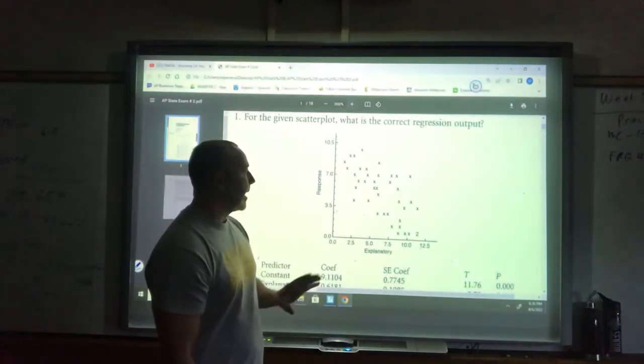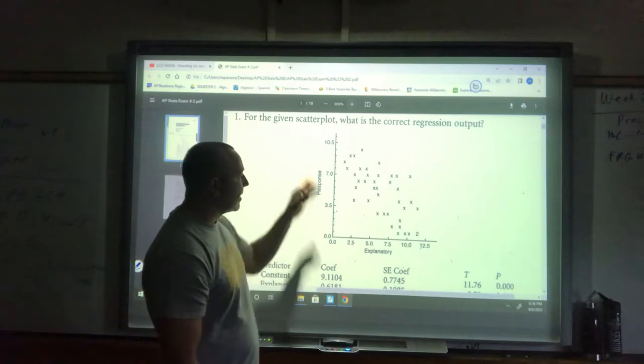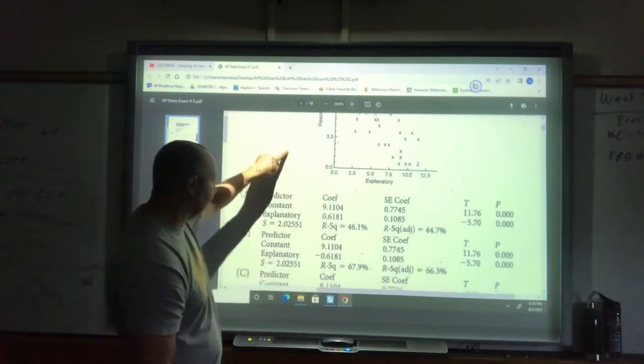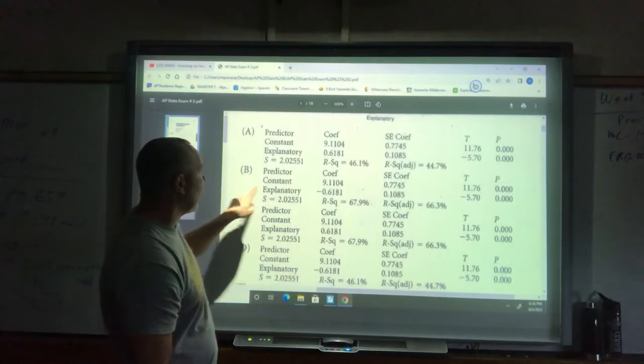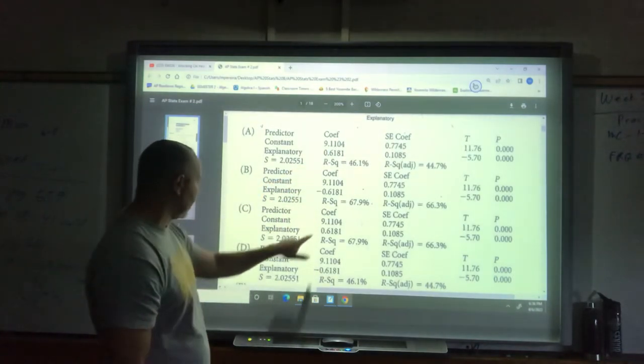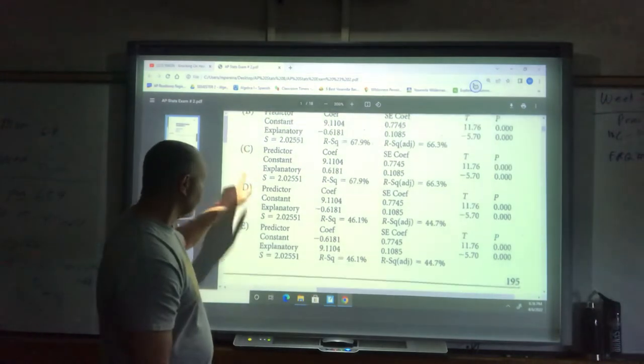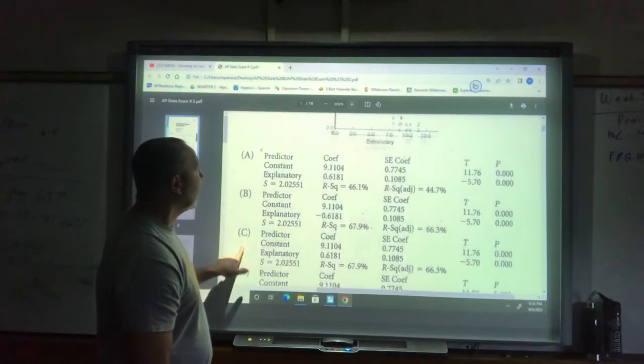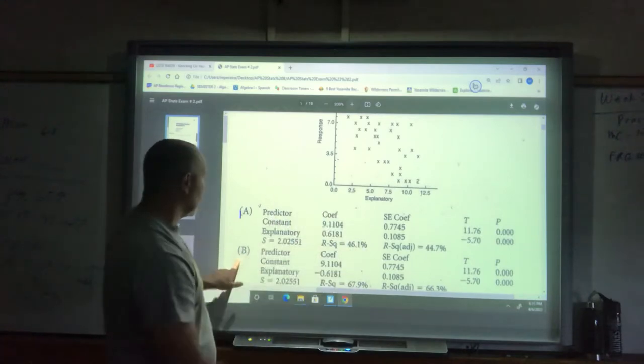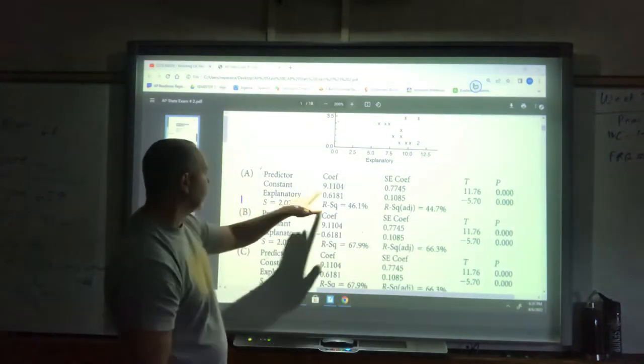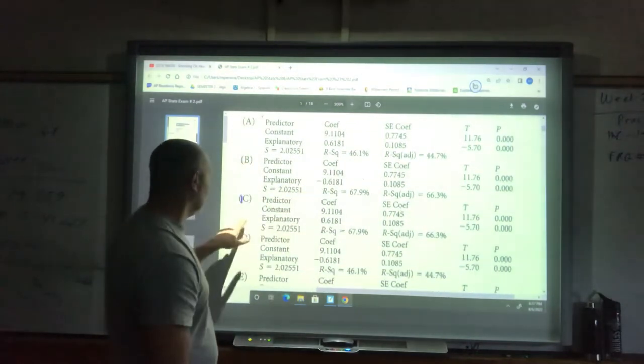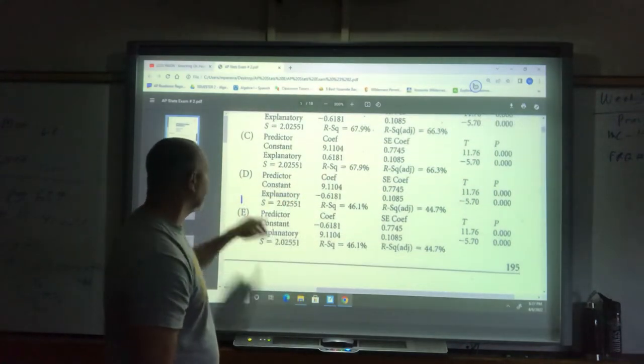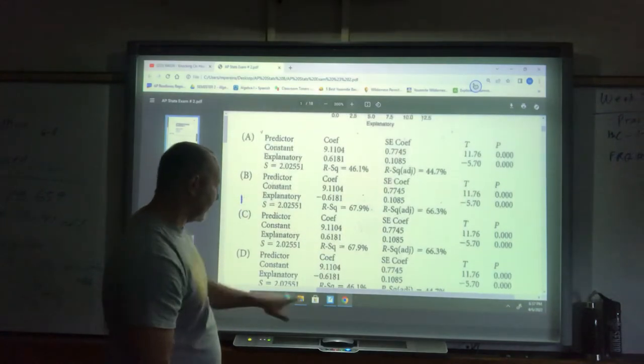I know the slope is negative, so in my explanatory, it has to be a negative value. Our y-intercept is positive 9.1, that looks good. Negative 0.61, e is out right there. When I look at the slope, the slope should be a negative value, it's going downhill. So a is out because it's positive, b looks good still, c is out because it's positive, d looks good, e is already gone.